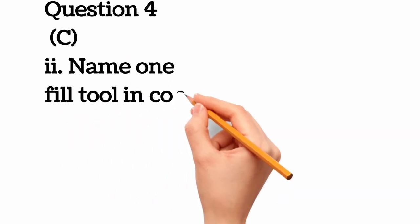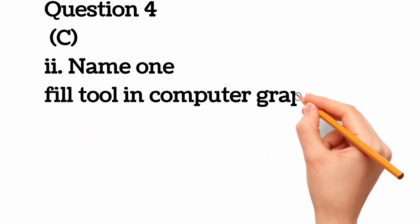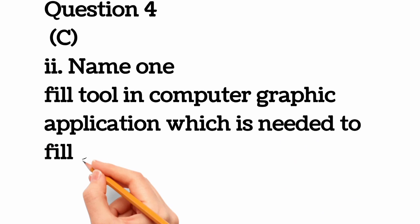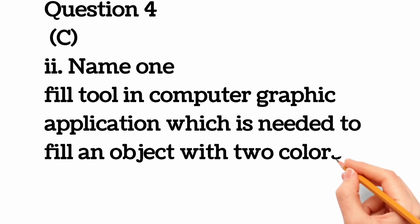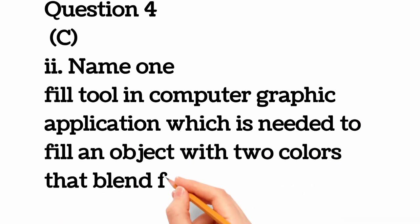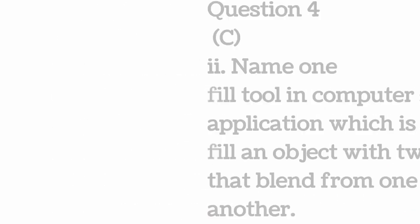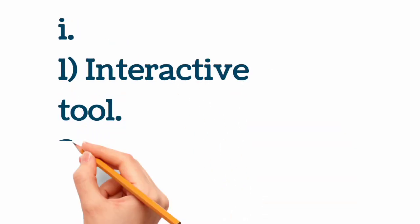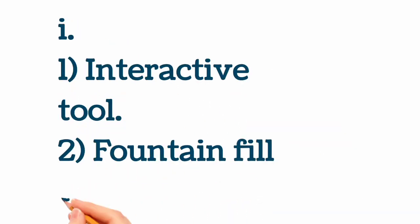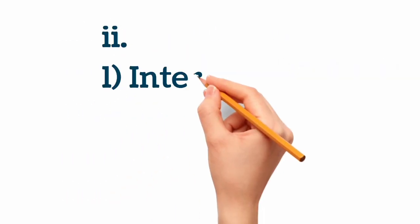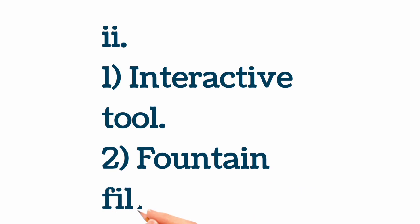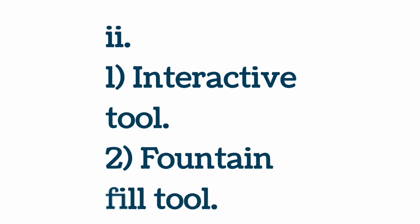Question 4c part ii: name one tool in a computer graphics application needed to fill an object with two colors that blend from one to another. The answer is the interactive tool and the fountain fill tool. The same applies to part ii — the answer is likewise the interactive tool and the fountain fill tool.